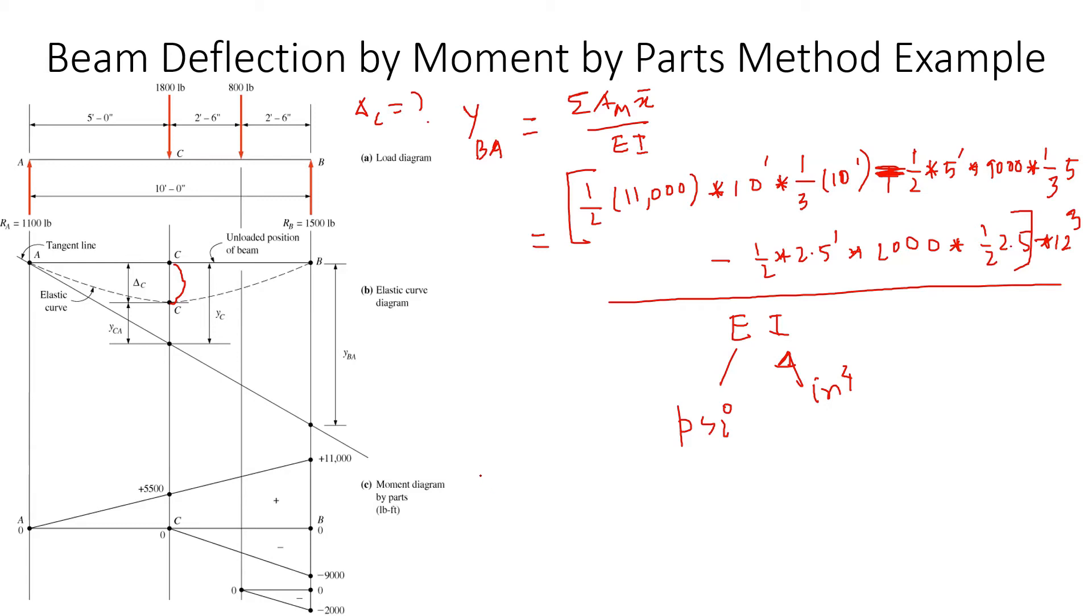Here is another interesting thing. Look at Y_CA. When you are talking about Y_BA, we draw a tangent line at A, and then see how far vertically that point is from the tangent at A. Same thing, if we are interested in Y_CA, we draw a tangent line at A and see how far is that point from C.